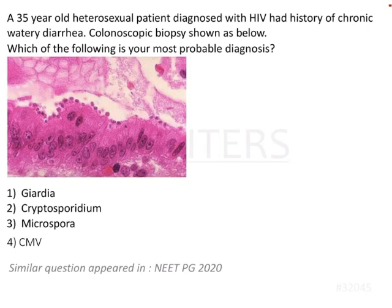The question asks for the most probable diagnosis. A 35-year-old heterosexual patient diagnosed with HIV had a history of chronic watery diarrhea, and a colonoscopic biopsy is shown. Our first keyword is that the person is suffering from HIV, and the second keyword is watery diarrhea.